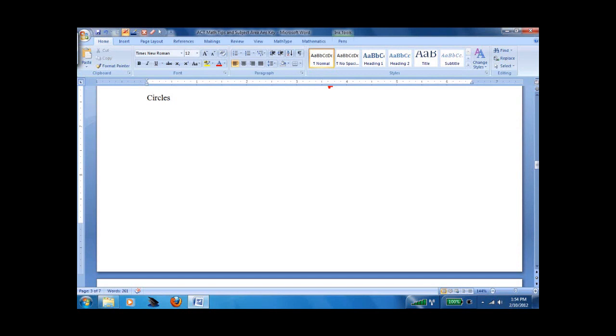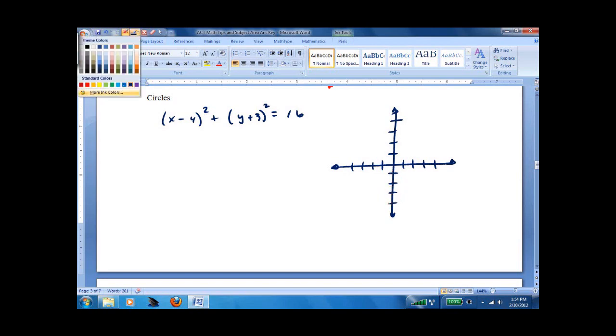Moving on to circles. Circles have equations that look like this. What this means is that you can draw them on a graph, and the center will be the flip of this. So if this is negative 4, it will be at 4, and it's positive 3, negative 3.